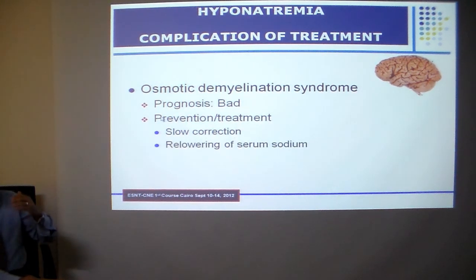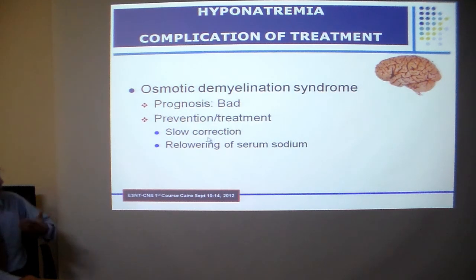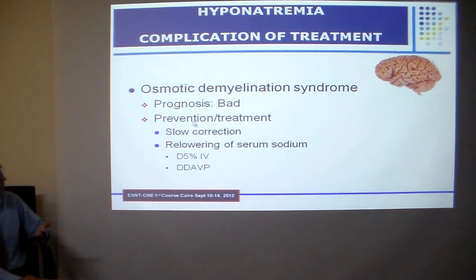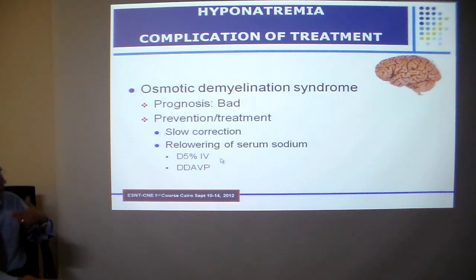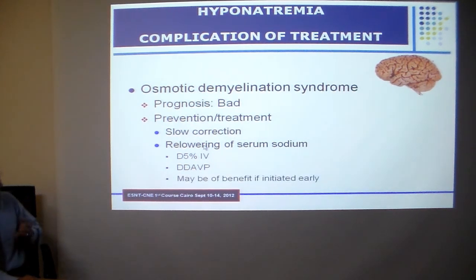The best approach is to prevent osmotic demyelination syndrome by correcting hyponatremia slowly. If you find that sodium has increased at a more rapid rate than intended, try to re-lower serum sodium by giving the patient dextrose 5% or an antidiuretic hormone analog to re-induce mild hyponatremia and prevent the catastrophe.